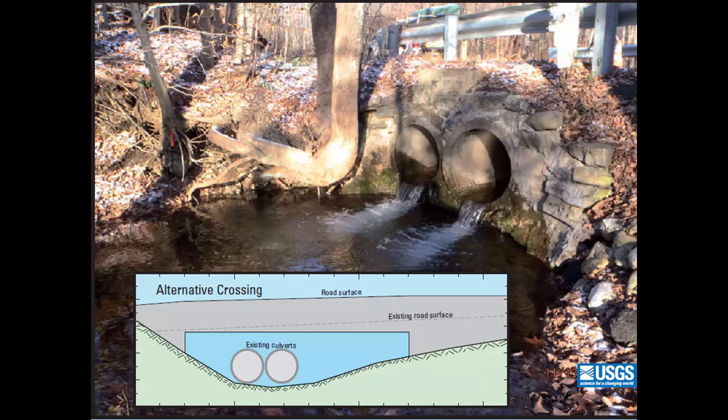They first evaluated the existing stream crossing structures for their ability to convey storm flows for the 5- to 500-year flood events. The simulations showed that water surface elevations for many of the designed flood flows exceeded the capacity of the structure and created flood situations upstream of the site. They also simulated the water surface elevation profiles for the same stream crossings using hypothetical structures designed for fish and wildlife passage, and found that road crossing structures were able to convey most of the flood flows.